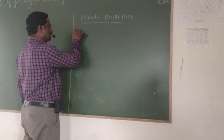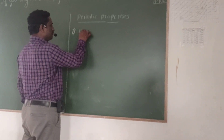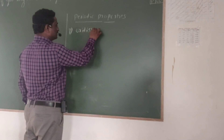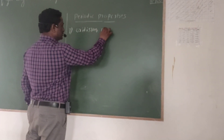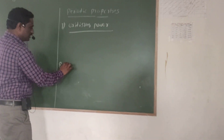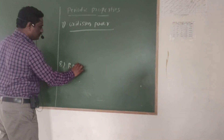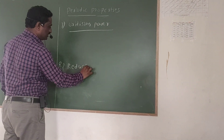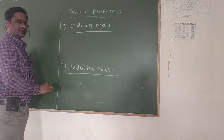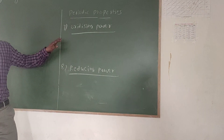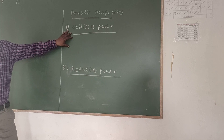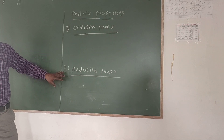Sometimes they are giving an oxidizing property — oxidizing power — and sometimes they are giving reducing power. So, what are the meanings of these? What is oxidizing power? What is reducing power?